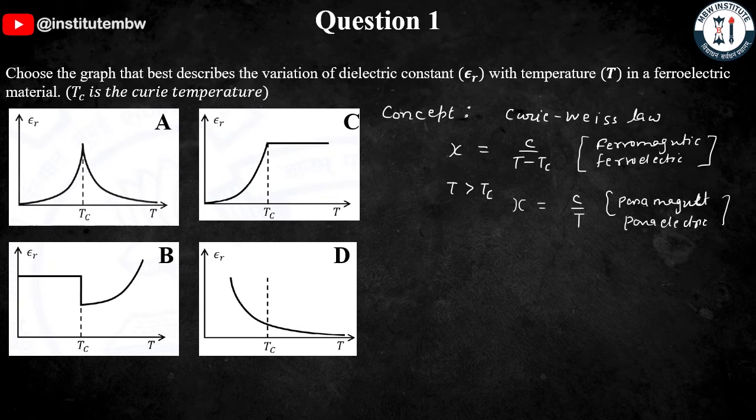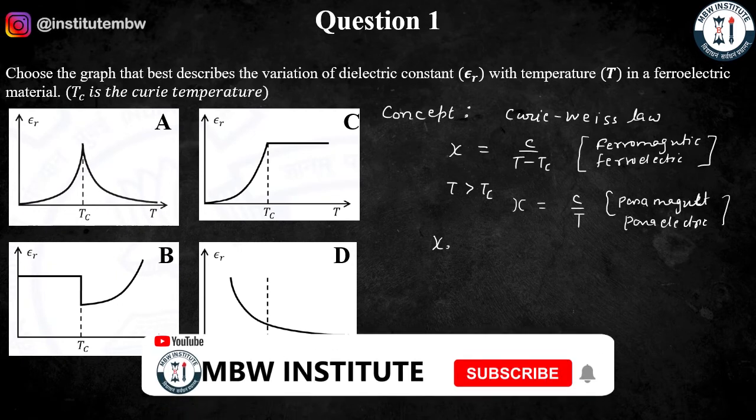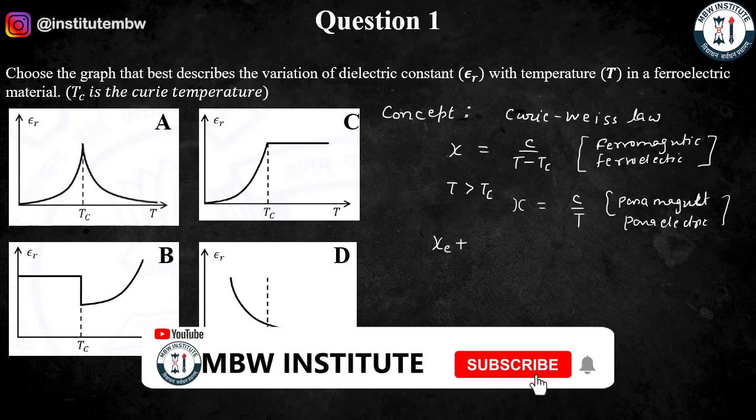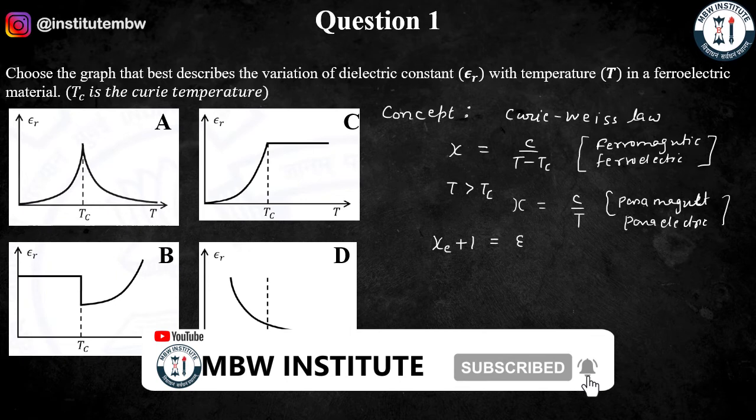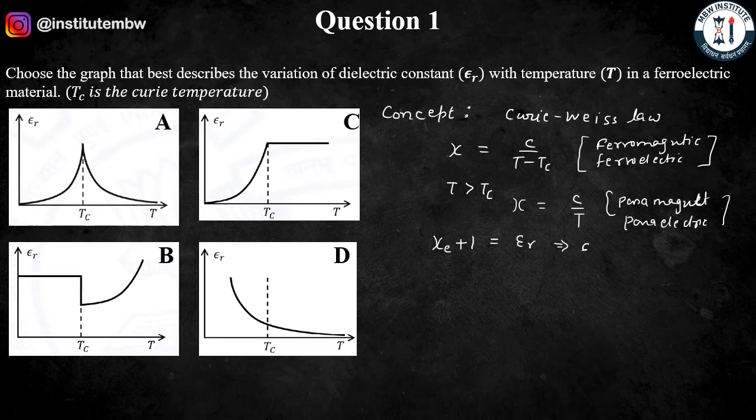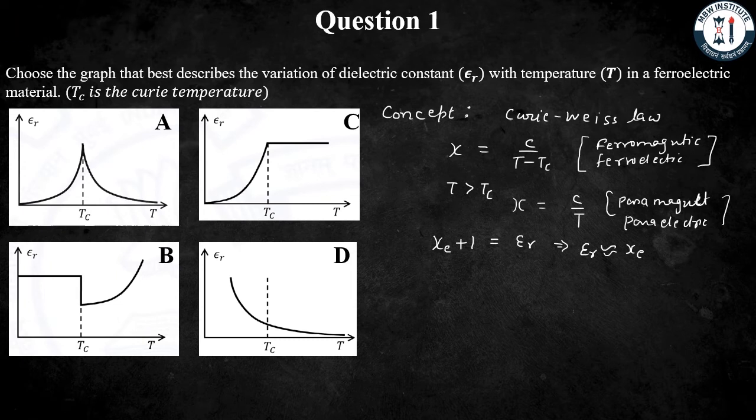We also know the relation that electrical susceptibility, xi E, plus 1 is equal to epsilon R. So the graph for xi E, that is electrical susceptibility, will be the same as epsilon R, that is dielectric constant.